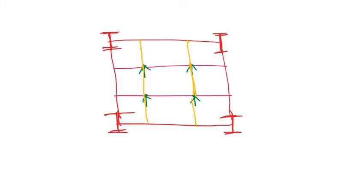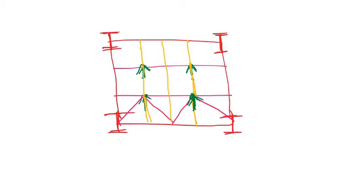Now we have connected all of them and loads are applied at the four support points. To transfer these loads to the columns, we simply provide bracing — struts arranged like this. Any load applied at a point travels through the nearest strut directly to the column, following the shortest load path.